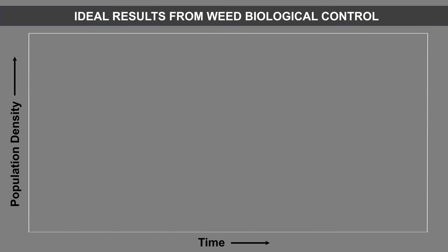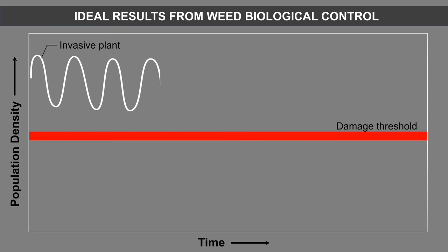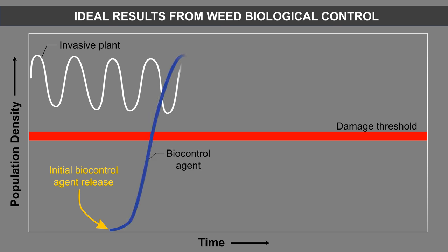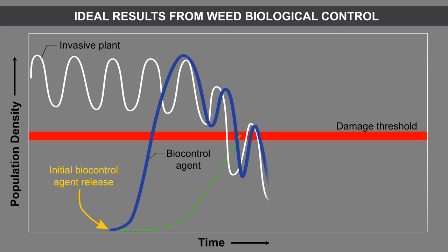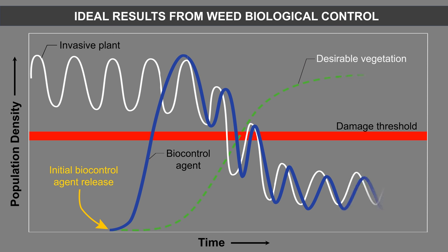This graph illustrates the ideal results of utilizing weed biological control. Target weed infestations regularly fluctuate, but their levels are originally above the damage threshold, where they cause economical and ecological harm. When biological control is successful, biocontrol agents increase in abundance until they help suppress the target weed to levels below the damage threshold. As local target weed populations are reduced, their biological control agent populations also decline due to starvation or the agents dispersing to other target weed infestations. In many biocontrol systems, there are fluctuations over time, with the target weed becoming more abundant, followed by an increase of its biocontrol agent, until the target weed and biocontrol agent populations stabilize at a much lower abundance.